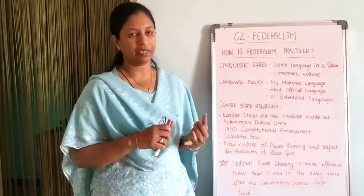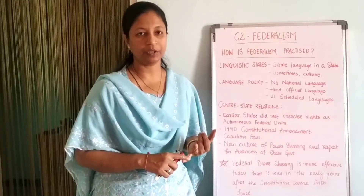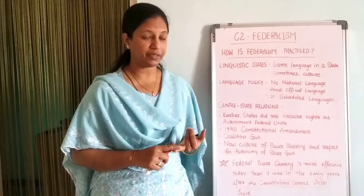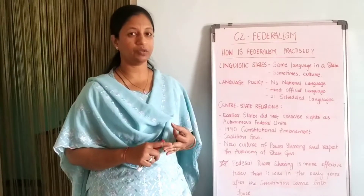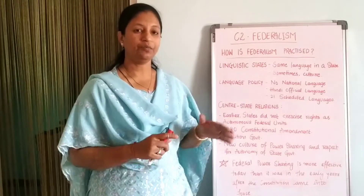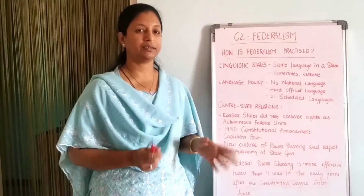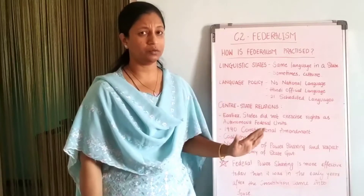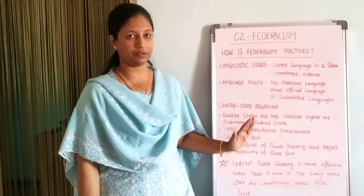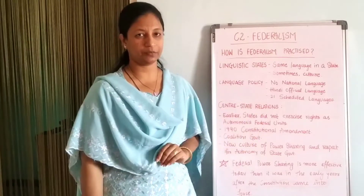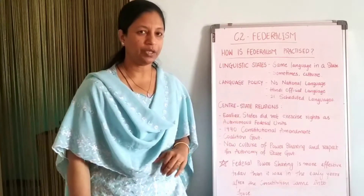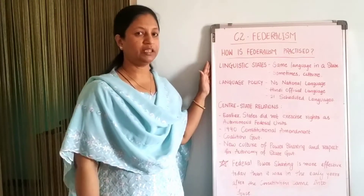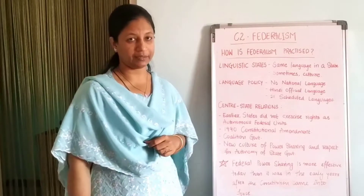For federalism to work, we need to bring awareness among the people. Our judiciary should be very strong. Violations and corruption should not go on. Everything should be in a systematic way, so that the country finally follows all the rules and regulations given in the constitution and runs successfully. Now we are going into some details of how federalism is practiced.